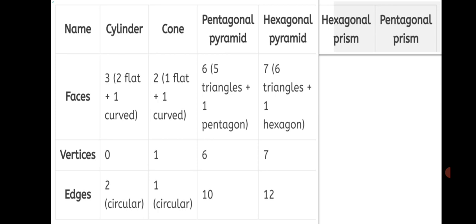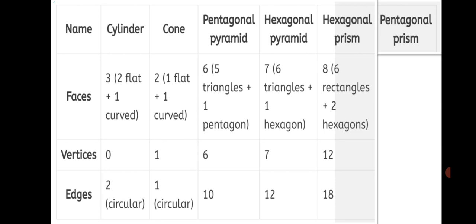Now let's write for hexagonal prism. It's a prism, not a pyramid. Faces will be 8: 6 rectangles at the sides plus 2 hexagons, 1 on top and 1 at the bottom, total 8 faces. Vertices: 6 on top and 6 below, 12 vertices. Edges: 6 on top of the top face, 6 at the bottom of the bottom face and 6 at the sides, altogether 6 threes are 18 edges.